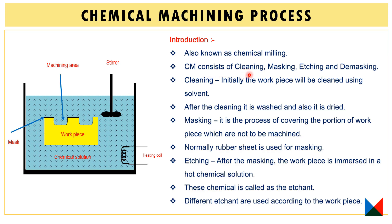There are four processes in chemical machining: first is cleaning, then masking, after that etching, and finally de-masking. These are all the processes carried out in the chemical machining process.